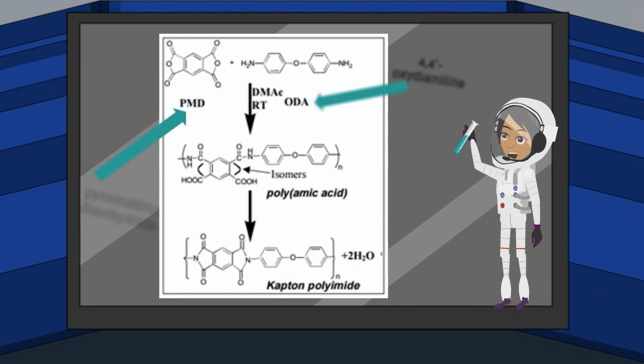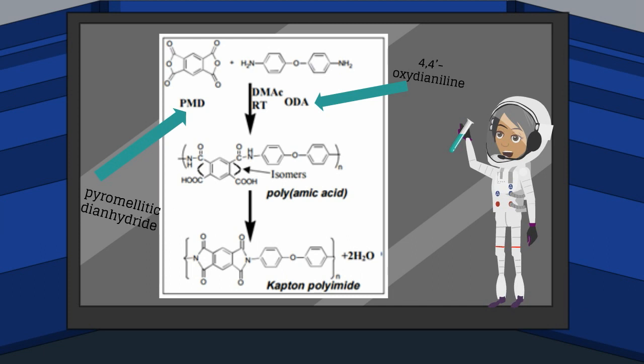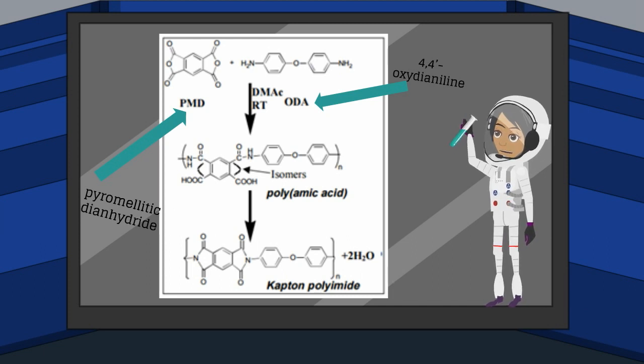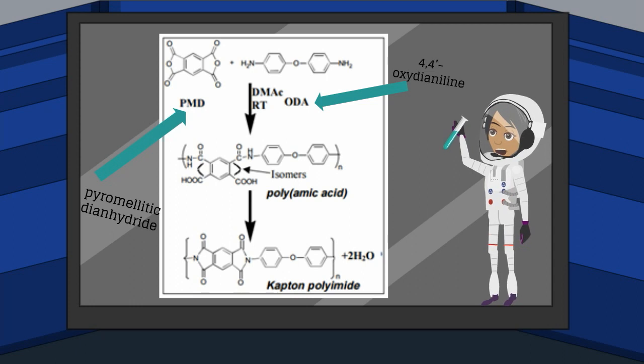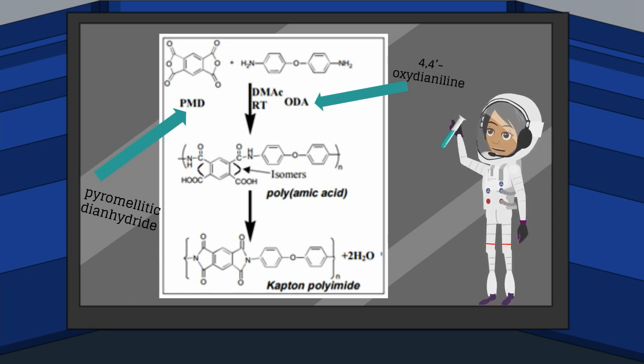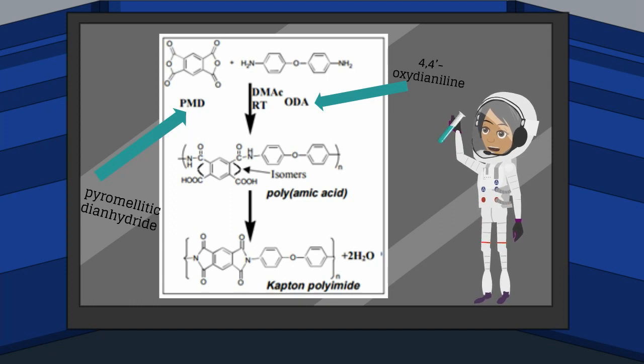Capton is often made of monomers, pyromellitic di-anhydride and 4,4-oxydianylene because of their reactiveness, which is a result of their high electron affinities. The process of forming a polyamide is a series of simple reactions that have a complex relationship and can be significantly affected by the reaction conditions and the mode of monomer addition.